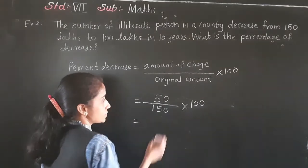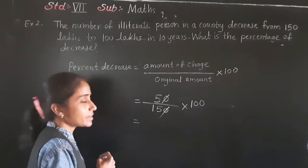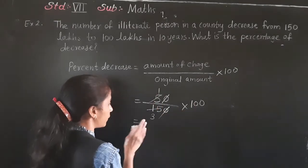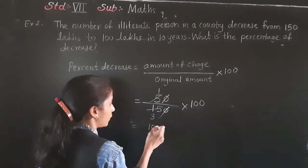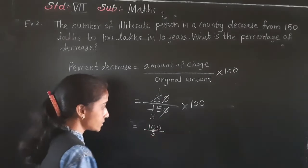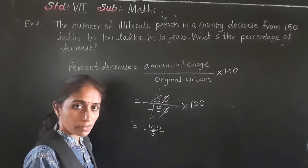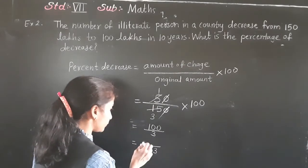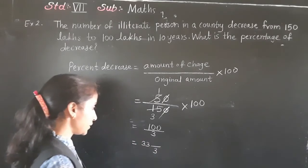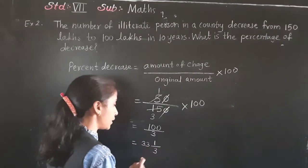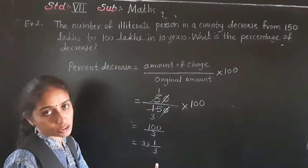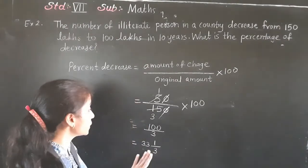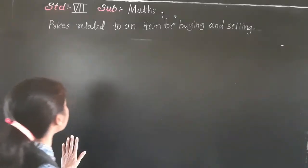Now do this calculation: 50 upon 150 multiplied by 100. Cancel the zeros; 5 ones are 5, 5 threes are 15. We get 100 upon 3, which converts to the mixed fraction 33 and 1 upon 3. So percent decrease is 33⅓.